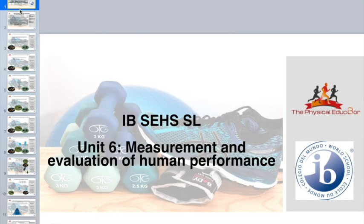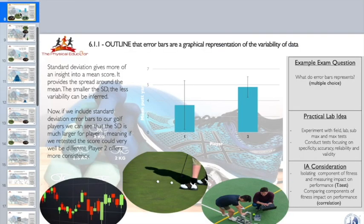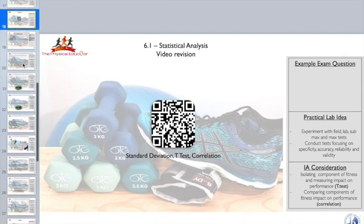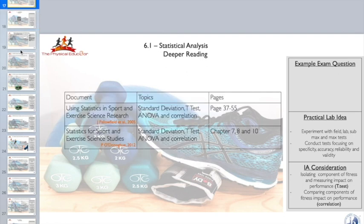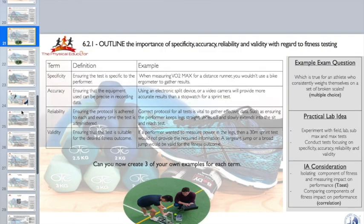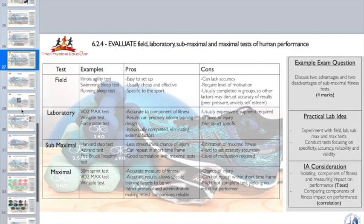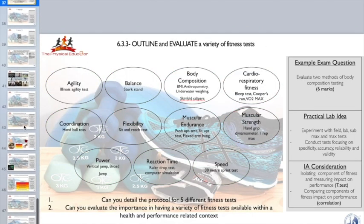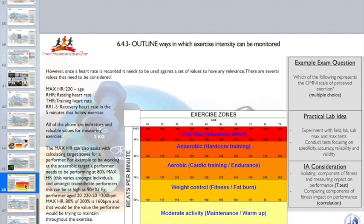Our point on unit six, including statistical analysis with standard deviation, t-tests and correlation, including QR codes and suggested reading, as well as study design, different types of tests, components of fitness and principles of training — visit the TES website and check out the Physical Educator channel there. Thanks for watching, see you again soon.